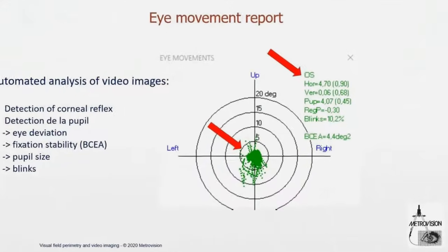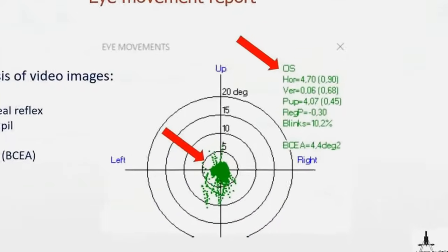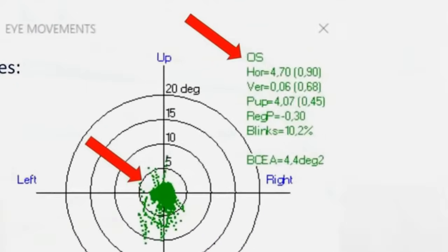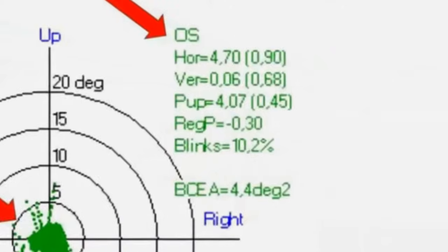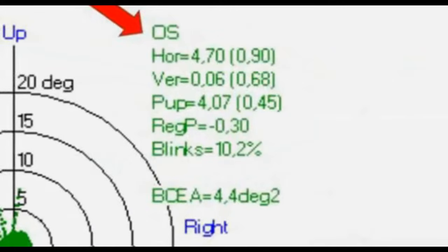Here you see some quantification of this cloud. You have what's called typically the BCEA. It's something used in microperimetry, which represents the surface area of fixation throughout the entire exam. So typically here we see that during the exam, the fixation has been over an area of 4.4 square degrees.